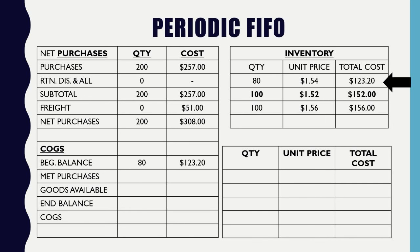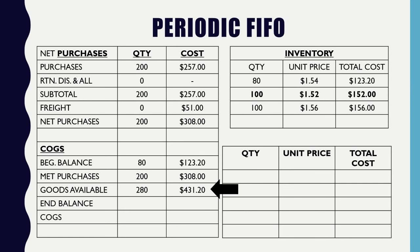Solving the new purchases: 100 at $1.27 plus $25 freight gives a total of $152 and cost per item of $1.52. The second batch: 100 at $1.30 plus $26 freight gives total of $156 and cost per item of $1.56. Totaling up: 200 total items, $257 purchase price, $51 freight, grand total of $308.